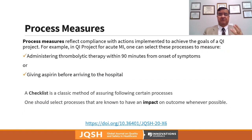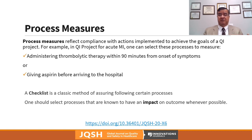Process measures reflect the compliance with actions implemented to achieve the goals of QI projects. For example, for a QI project relevant to acute MI (myocardial infarction), one can select processes such as administering thrombolytic therapies within 90 minutes from the onset of symptoms, or giving aspirin before arriving at the hospital. A checklist is a classic example of a method to assure following certain processes.